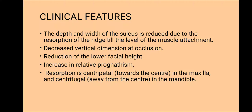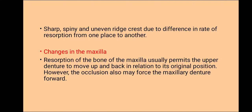Clinical features of residual ridge resorption: the depth and width of the sulcus is reduced due to resorption of the ridge till the level of the muscle attachments, which decreases vertical dimension at occlusion and reduces the lower facial height and increases relative prognathism. Because of mandibular resorption occurring outwards, relative prognathism increases. Resorption is towards the center in the maxilla and away from the center in the mandible. Sharp, spiny, and uneven ridge crests are seen due to differences in the rate of resorption from one area to another.